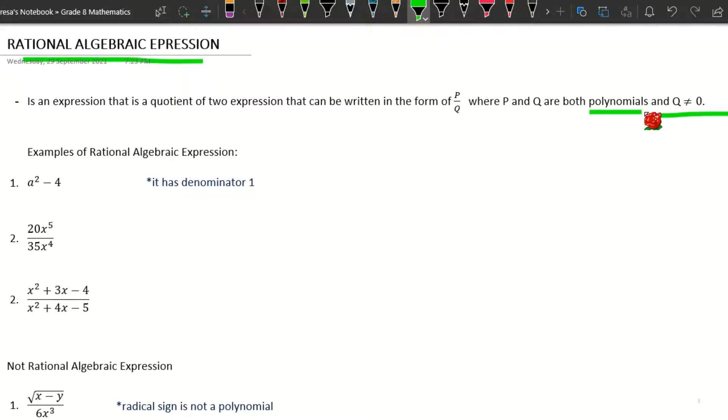We have here examples of rational algebraic expressions. First, a² - 4. So this is an example of a rational algebraic expression because this can also be written as (a² - 4)/1. It has a denominator of 1.